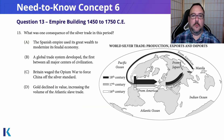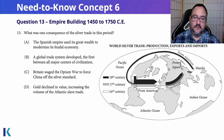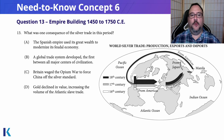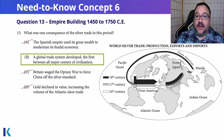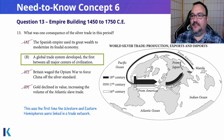That is what drove this trade. Now, what is one consequence of the silver trade in this period? Remember, consequences can be positive or negative. Answer choice B is going to be the correct answer: a global trade system develops, the first between all major centers of civilization.